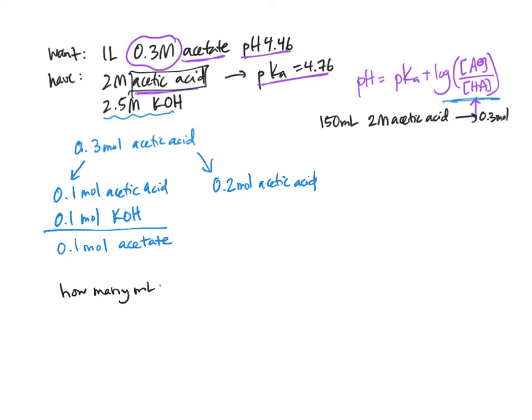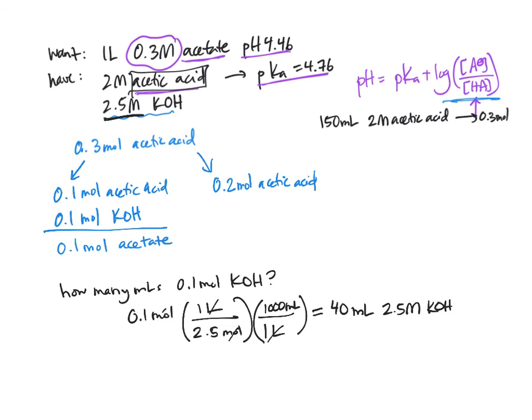We're left with another math problem, however. How many mils is 0.1 mole of KOH? Let's do the conversion. 0.1 moles. We need to cross-divide. We've got 2.5 moles per liter of KOH. That's the concentration up here. And we need to convert to milliliters. So 1 liter is the same as 1,000 milliliters. The number of mils containing 0.1 moles of KOH is 40 mils of 2.5 molar KOH. Let's put that up here as well.